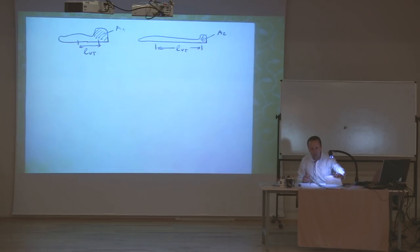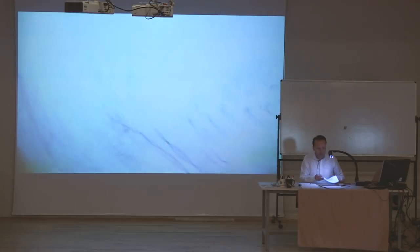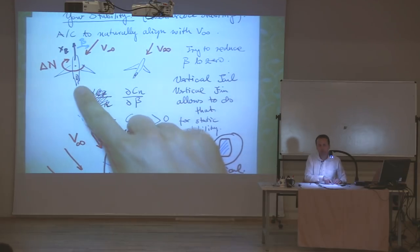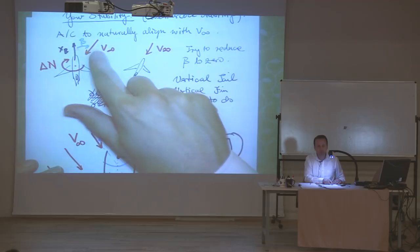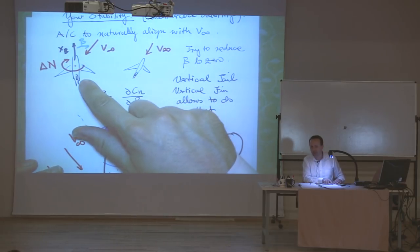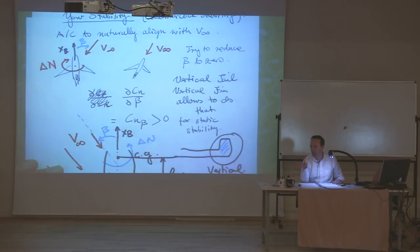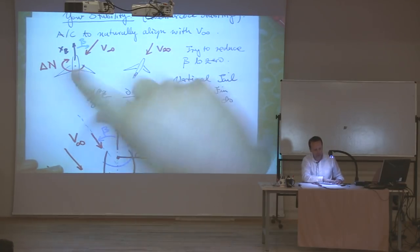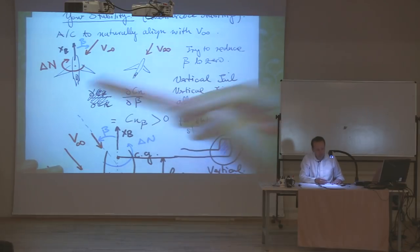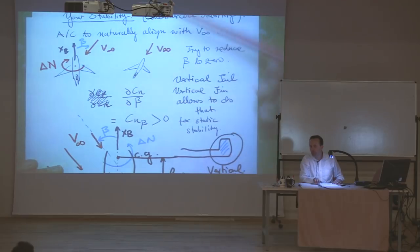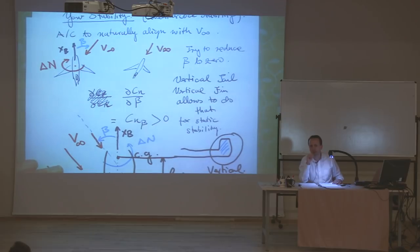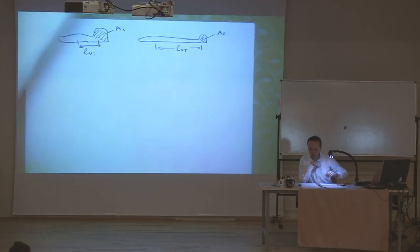If the vertical tail volume ratio is chosen correctly, the restoring moment will be appropriate. Too large a value gives a very fast rotation that may overshoot and cause oscillations; too small gives a slow rotation that may not be good enough. So when designing an airplane, you choose a vertical tail volume ratio based on what is known to work well.